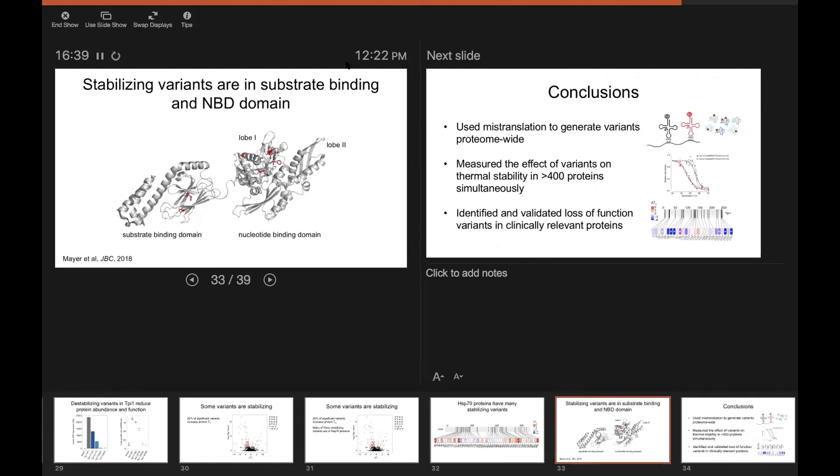And based on previous work, we expect that these mutations are actually loss of function mutations. And we think that this suggests that the stabilizing variants we identify are probably just as likely to be loss of function variants as the destabilizing ones.